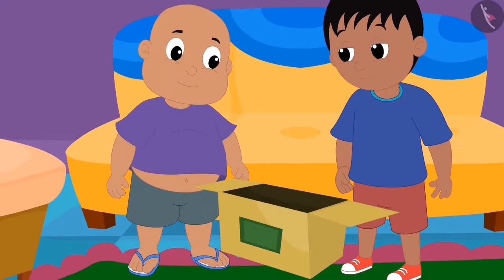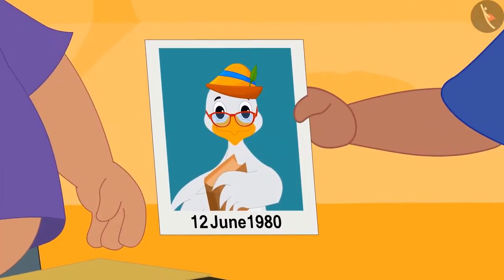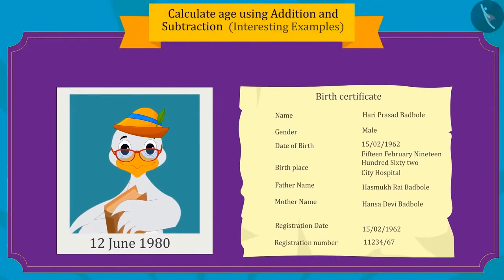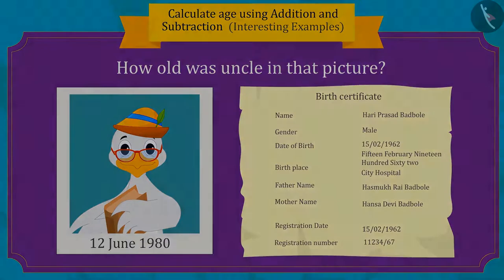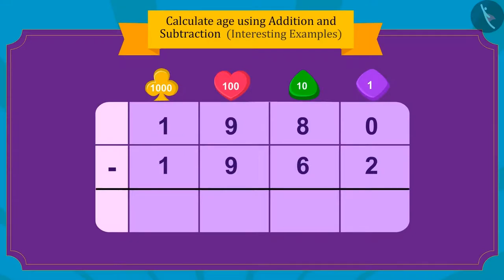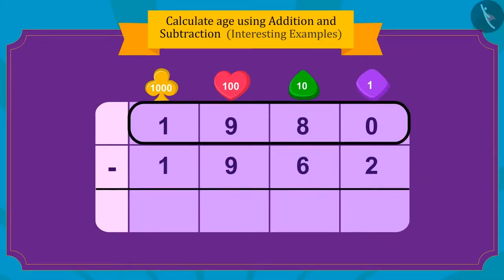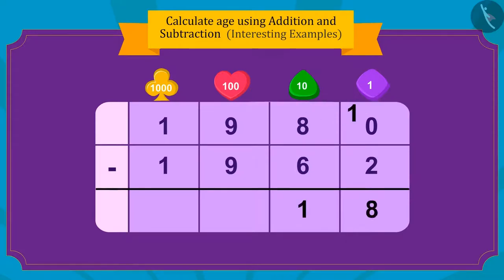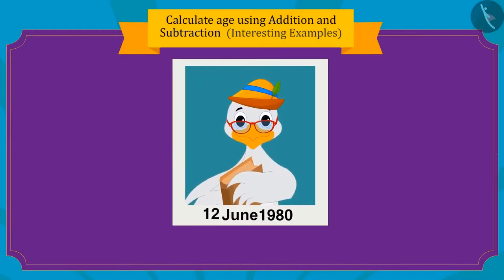Now Raju found another picture of uncle. Here uncle is seen in his college. The date written below the college picture is 12th June, 1980. Children, can you tell me how old uncle was in that picture? If we subtract 1962 from 1980, we can find the age of uncle in this picture. Uncle's age in this picture is 18 years.